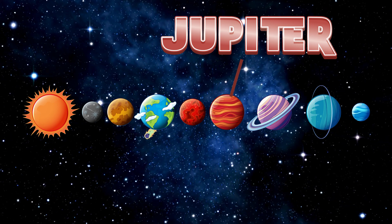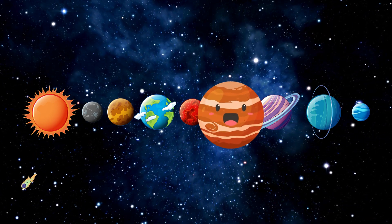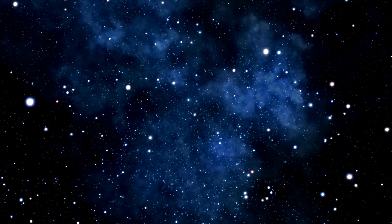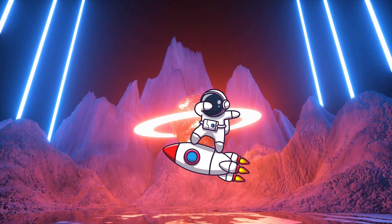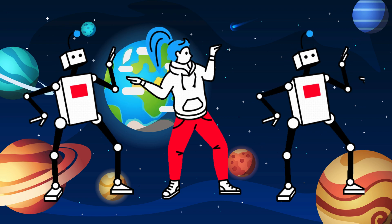Jupiter's giant with a big red spot, it's the biggest planet, oh it's a lot. Saturn has rings that swing so wide, made of ice and rock, such a cool ride!